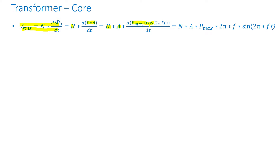Since we are applying a sinusoidal voltage, the flux density will be sinusoidal, and we can write it in the form of maximum flux density times the cosine of 2πft, where f is frequency and t is time. Since B_max is just a number it can be taken out, giving: number of turns times cross-section area times B_max times the derivative of cosine(2πft), which is 2πf times negative sine. Since we're just talking about magnetics here we will not worry about signs, so it becomes sine(2πft).